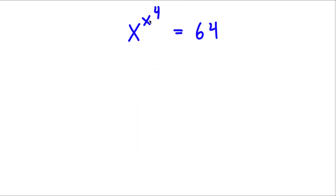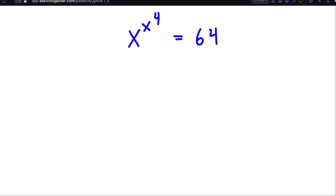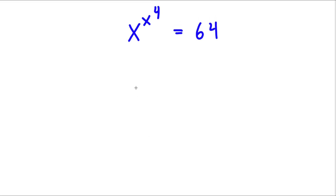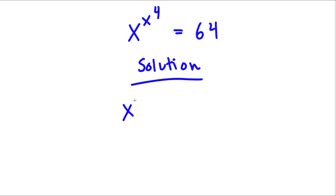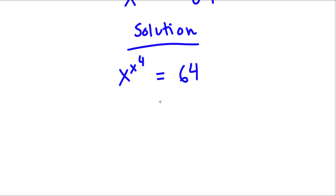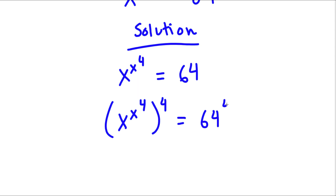So we have x to the power of x to the power of 4 is equal to 64. Now, for our solution here, I start with x to the power of x to the power of 4 is equal to 64. Now, I'm going to take the power of 4 on both sides. So now I have x to the power of x to the power of 4, to the power of 4, is equal to 64 to the power of 4.